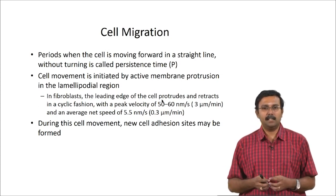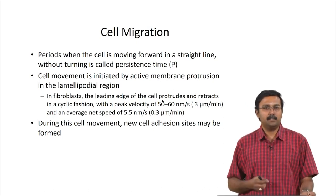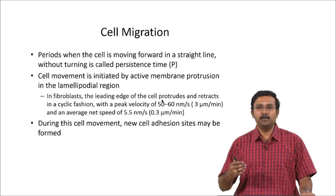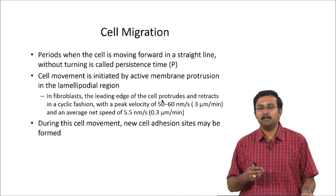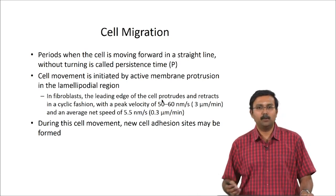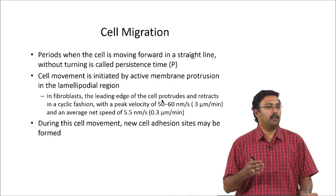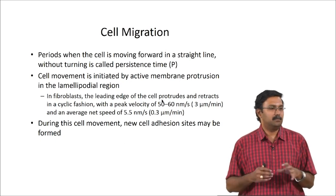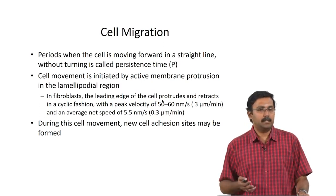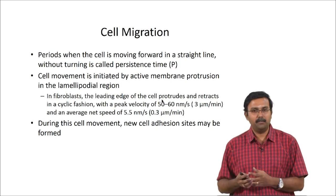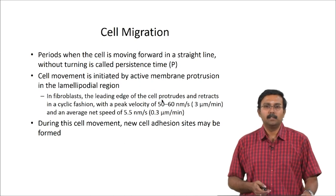Cell movement itself is initiated by active membrane protrusion in the lamellipodial region. In the case of fibroblasts, the leading edge of the cell protrudes and retracts in a cyclic fashion — the peak velocity can reach about 50–60 nanometers per second, averaging a net speed of 5.5 nanometers per second. During cell movement, new cell adhesion sites have to be formed so the cells can leave the previous adhesion site and go to the new adhesion site.